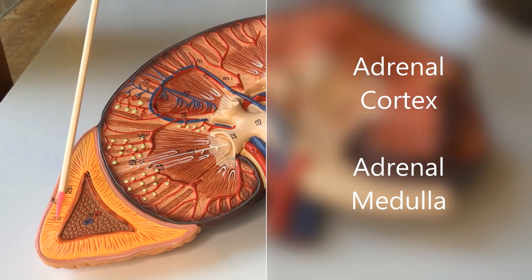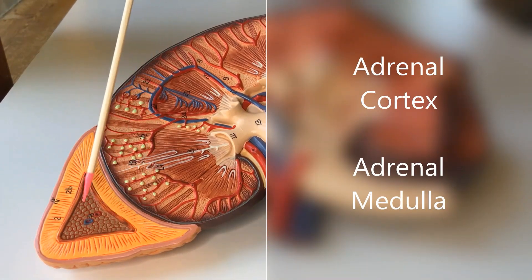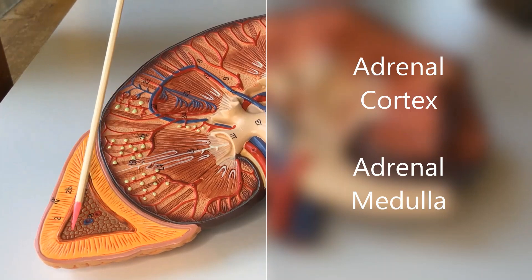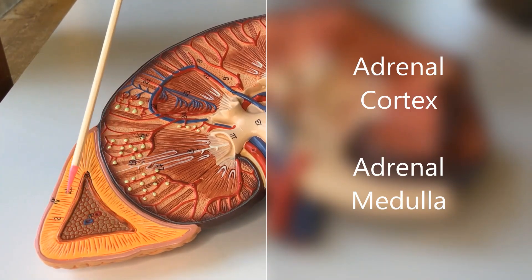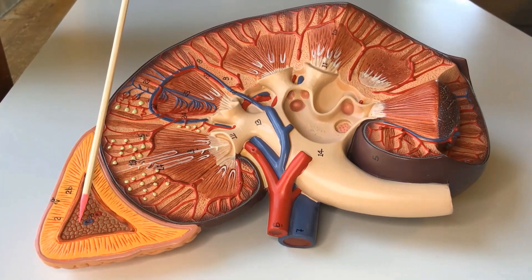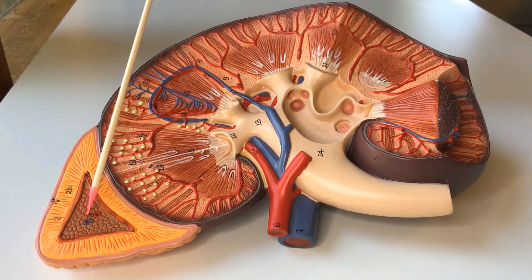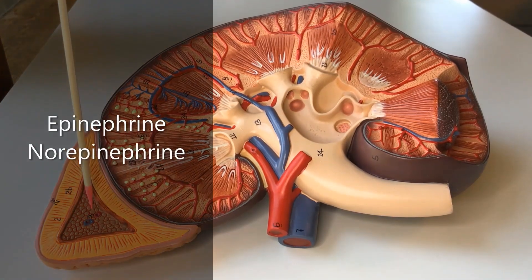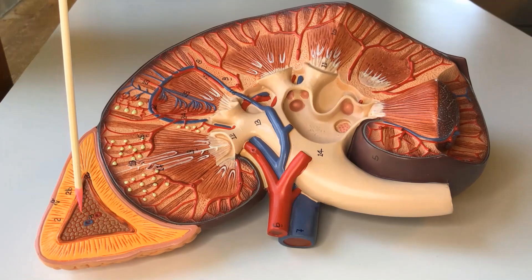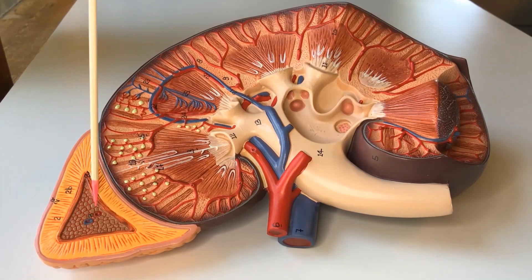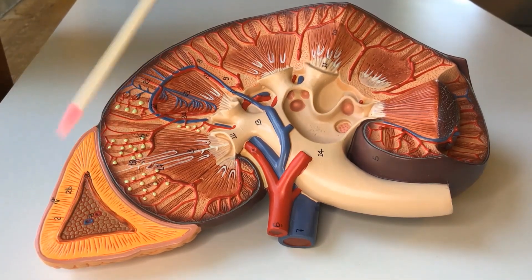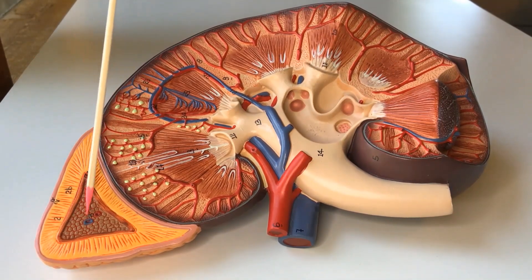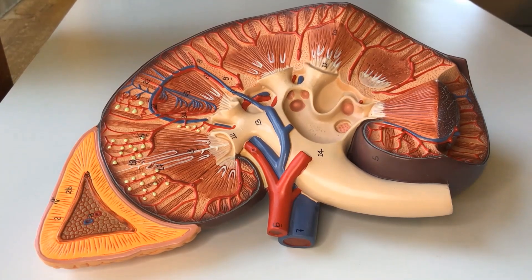The adrenal cortex is this outer bit right here, and the adrenal medulla is this middle bit right here. The medulla produces two hormones you're probably familiar with — at least one of them — epinephrine and norepinephrine. They used to be called adrenaline and noradrenaline, so epinephrine and norepinephrine are the preferred terms. These regulate your fight-or-flight response.